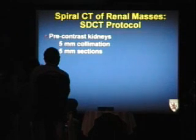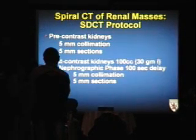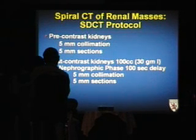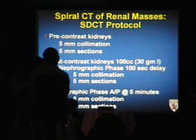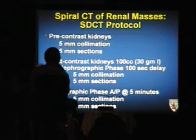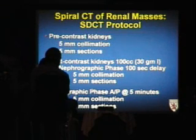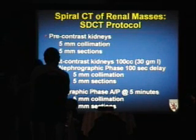In the single-detector CT era, we used 5 mm collimation, 5 mm sections, before and after contrast material — 100 cc or 30 grams of iodine — and then a pyelographic phase after the nephrographic phase, also using 5 mm. This is really the state-of-the-art that Mort Bosniak described years ago.